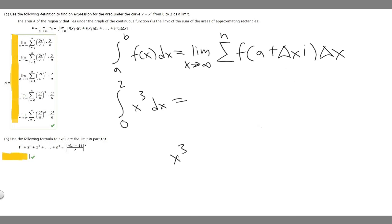So first let's start off by finding delta x. So delta x is going to be equal to b minus a over n. So we already know b is going to be 2, and a is going to be 0. So it's just 2 minus 0 over n. So it's going to be equal to 2 over n.